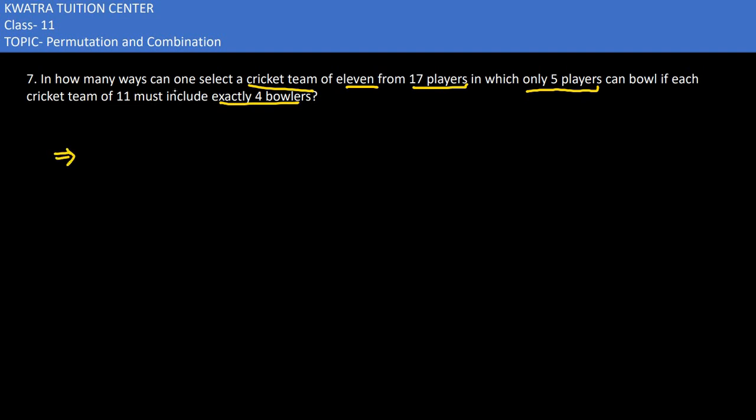So let's see in how many ways this can be done. First, we have 5 players who can bowl, and we need to select 4. The other condition is that we have 17 total players. If 5 are bowlers, then how many are batsmen?